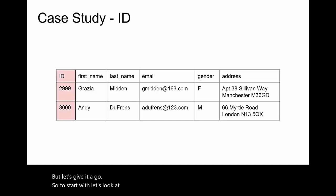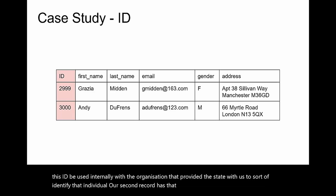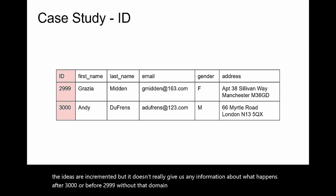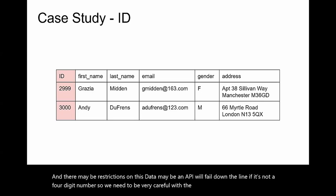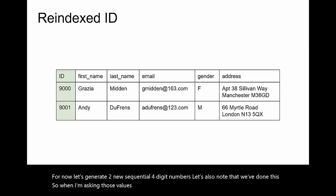Let's look at that ID. Does ID 2999 imply there are 2998 rows? Could this ID be used internally by the organisation that provided this data to identify that individual? Our second record has ID 3000, so this seems to imply the IDs are incremented. Without that domain knowledge it's really difficult to know just how dangerous this ID could be, and there may be restrictions on this data. Let's generate two new sequential four-digit numbers — we're now masking those values with 9000 and 9001, so it's still four digits, still incrementing, but not the same IDs as before.